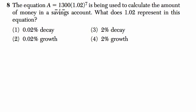So the equation they give us, A equals 1,300 times 1.02 to the 7th, is being used to calculate the amount of money in a savings account. The number 1,300 written first is usually P for principal.